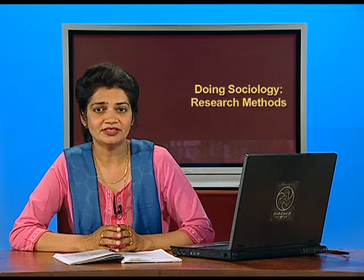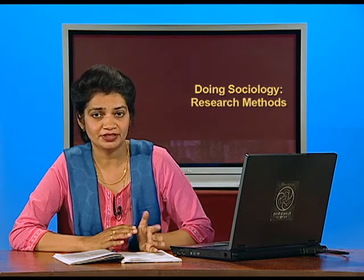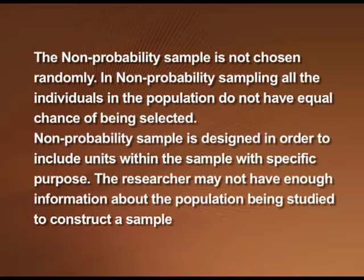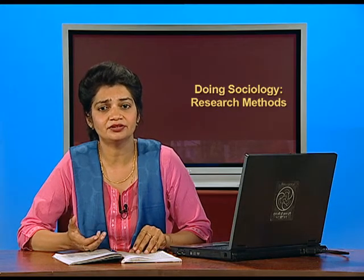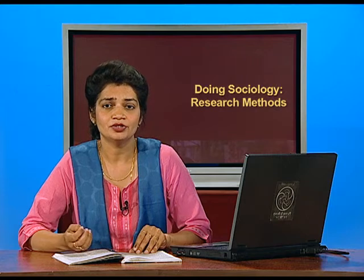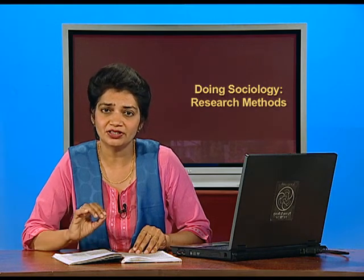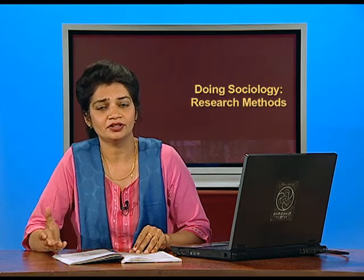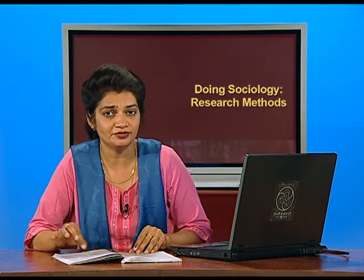Non-probability sampling is not chosen randomly, as opposed to probability sampling. In non-probability sampling, all individuals in the population do not have an equal chance of being selected. A non-probability sample is designed to include units within a sample with a specific purpose. The researcher may not have enough information about the population being studied — for example, when studying criminal behaviour, drug abusers, or gangs. So the researcher simply contacts whom they can, and from there contacts others in the chain. This is known as convenience sampling, depending upon the convenience of the researcher.